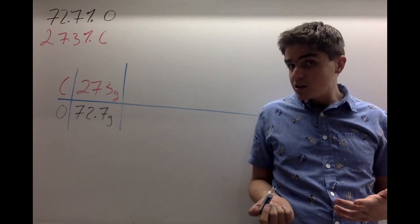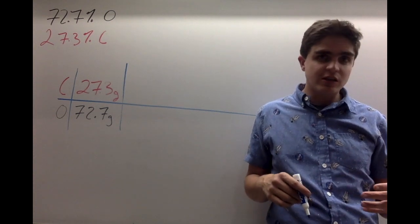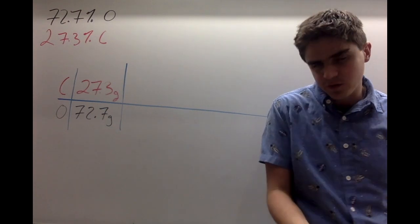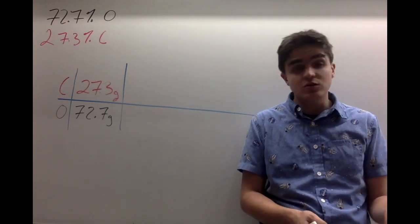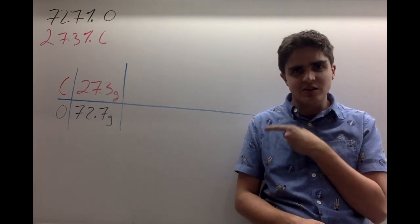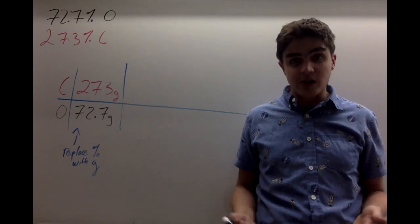So the first thing I'm going to do is I'm going to set up my table here, and I'm going to set it up in lots and lots of steps, but my first columns are just going to be the element's name, and each row is going to be its own element, just like normal, and I'm going to replace the percentages with grams.